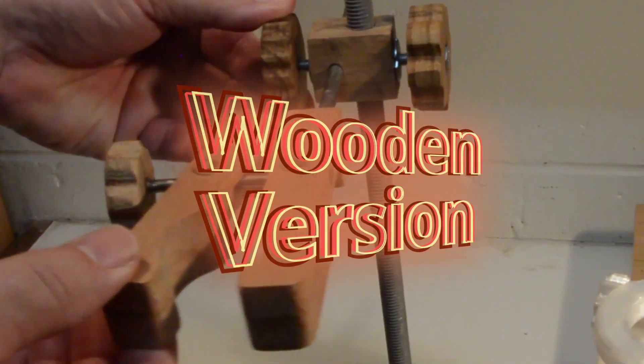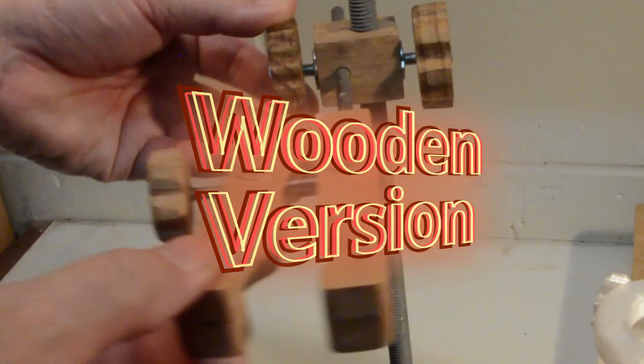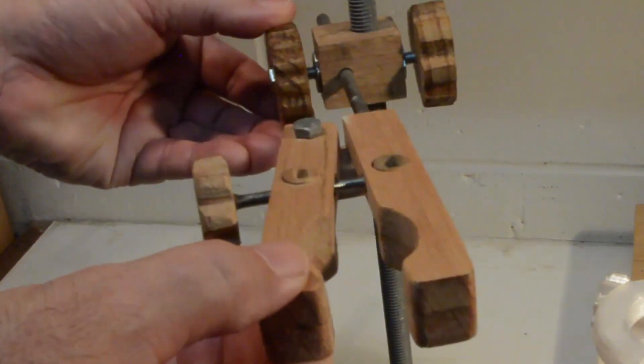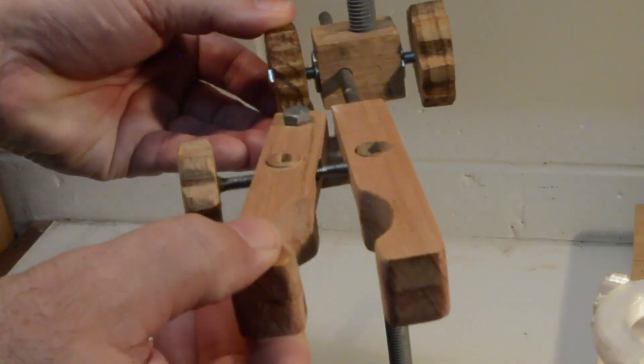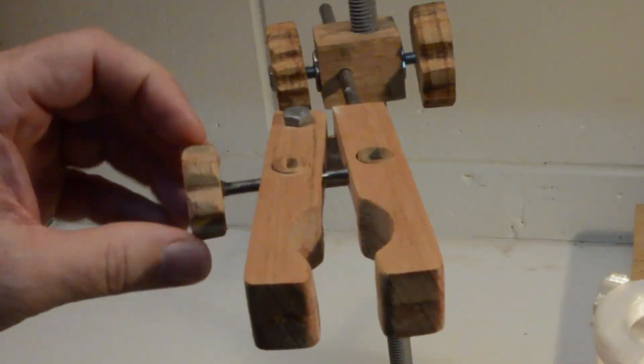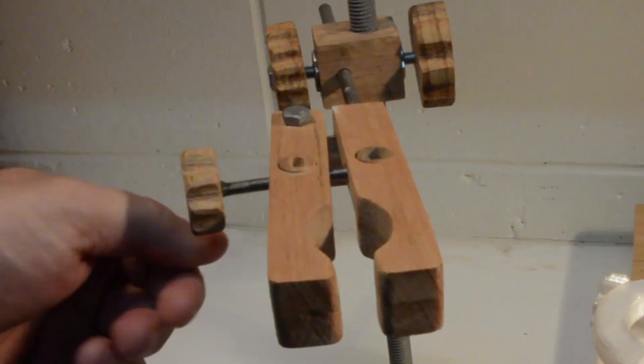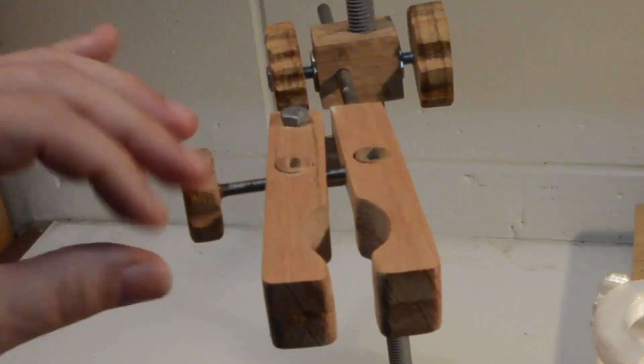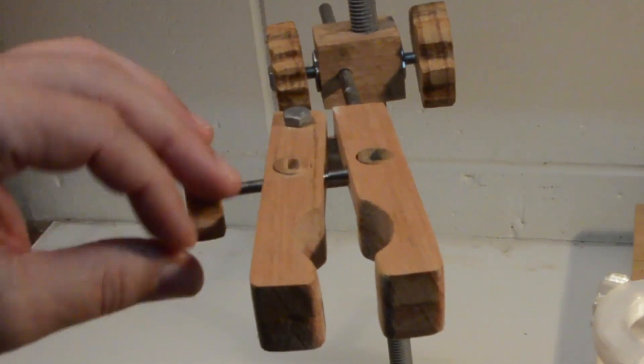The wooden version of the lab clamp, which simply requires a handsaw and drill, is for those without access to a 3D printer. The wooden version not only enables a robust lab clamp that can withstand elevated temperature, but which also truly does enable a DIY clamp for just a few dollars, without the hidden need of hundreds of dollars or more in tools and equipment.